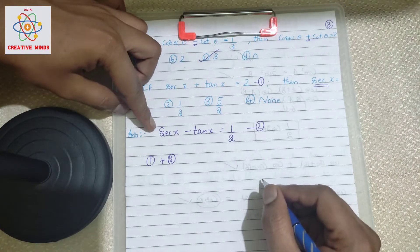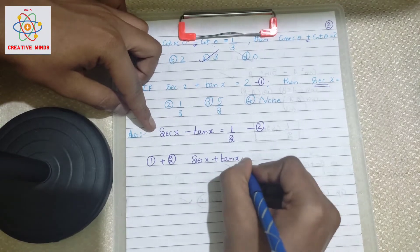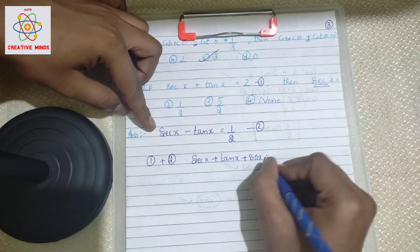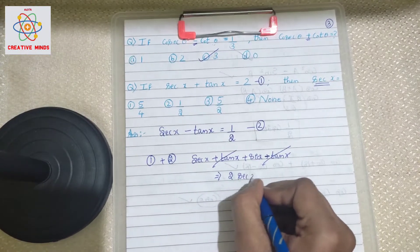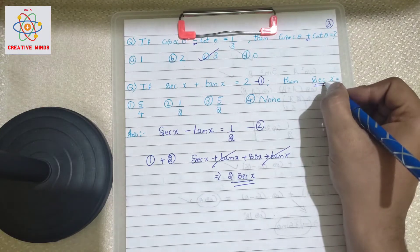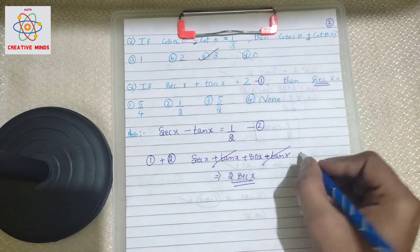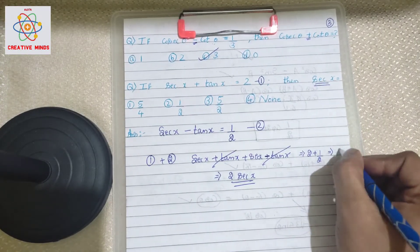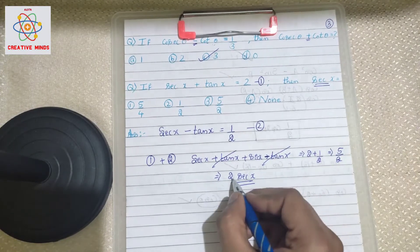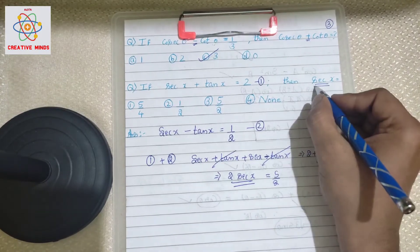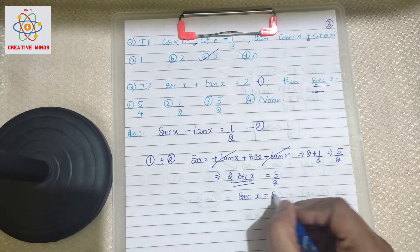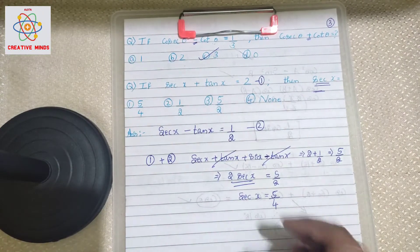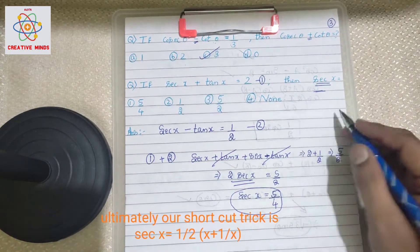Now add equation 1 and equation 2: (sec x + tan x) + (sec x − tan x). The tan x terms cancel, leaving 2·sec x = 2 + 1/2 = 5/2. Therefore sec x = 5/4. In just two simple steps you get the answer. With enough practice, you can solve these just by looking at the question.